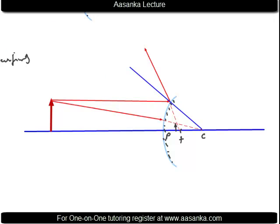When the object is between the pole and infinity, the image is virtual because it is at the back of the mirror. It is erect — the arrowhead pointing upward in the object is also pointing upward in the image. The image is diminished because little energy is received. The image is formed between the principal focus and the pole.